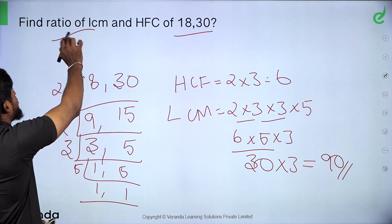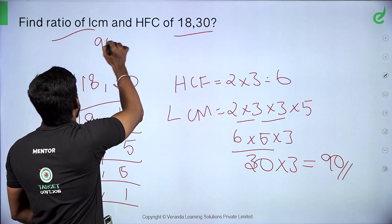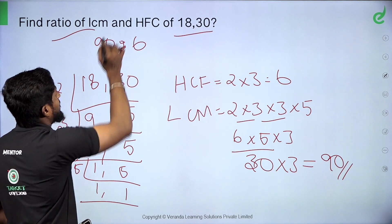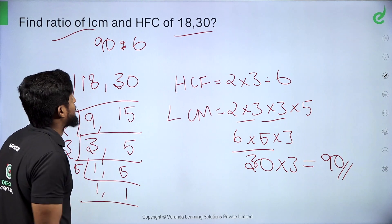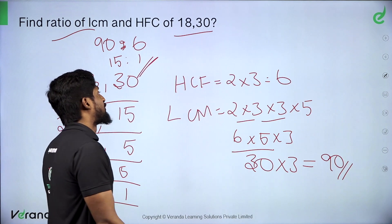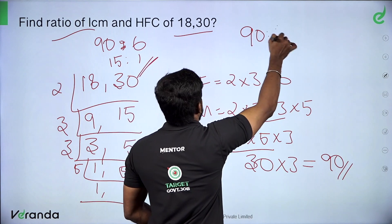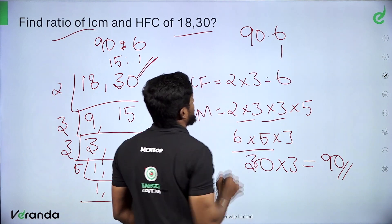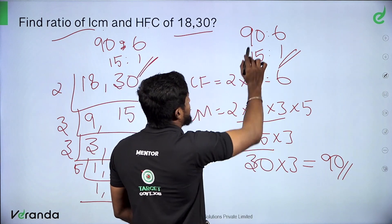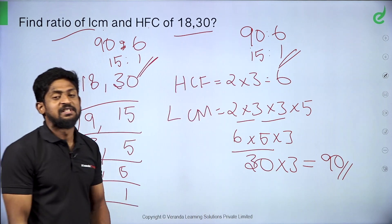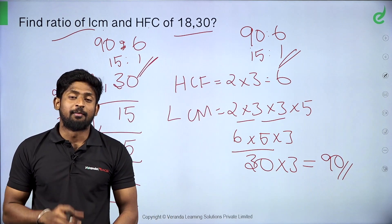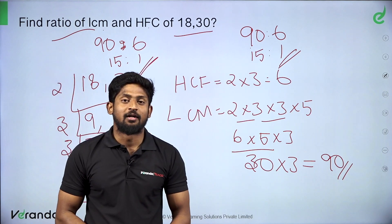Here we find the ratio of LCM and HCF. LCM is 90 and HCF is 6. To find the ratio: 90 divided by 6 is 15. So the ratio of LCM to HCF is 15 to 1. Because 6 times 15 is 90, the ratio comes to 15 to 1.